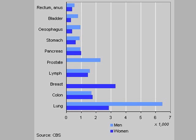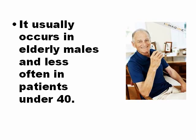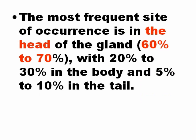Pancreatic cancer is the fifth tumor that produces death. It usually occurs in elderly males and is less common in patients under 40 years old. The most frequent location is the head of the gland — 60 to 70% of cases — which is why it is called carcinoma of the head of the pancreas.